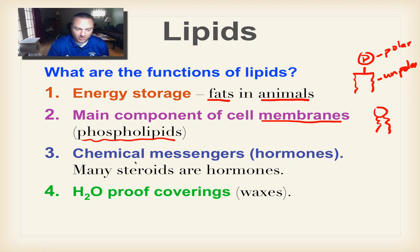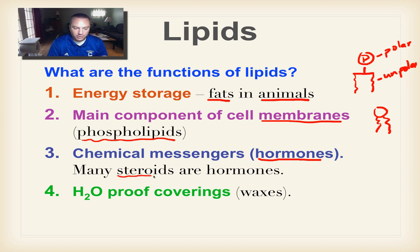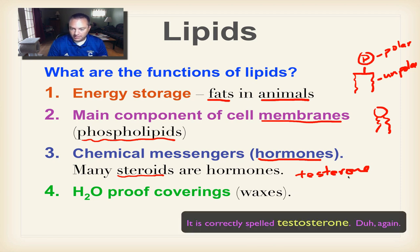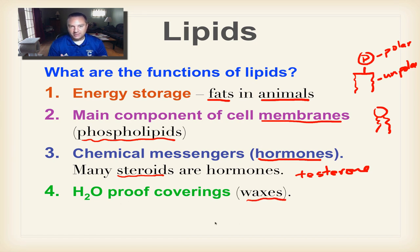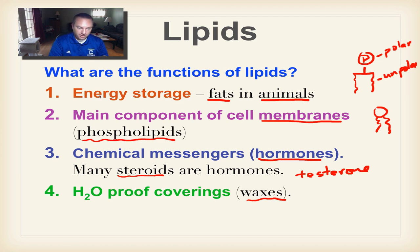Third function: chemical messengers, also known as hormones. They're made in one part of the body and travel to another to cause something to happen. Many steroids are hormones — for example, the male hormone testosterone. Fourth function: waterproof coverings. These are your waxes, found on the leaves of trees and tropical plants to keep rain from damaging the leaves, and on insects' exoskeletons to keep water from getting inside.